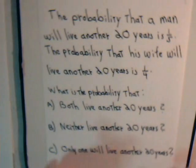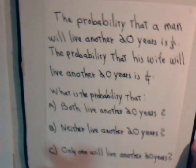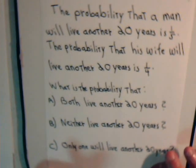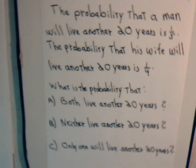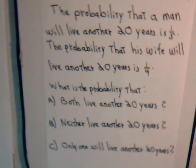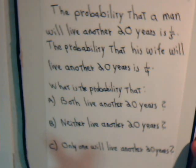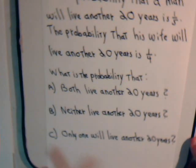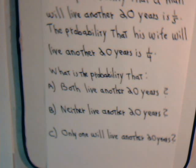In this one we have a pretty straightforward problem. The probability that a man will live after 20 years is one-fifth. The probability that his wife will live another 20 years is one-fourth. We are asked three questions: What is the probability that both of them will be alive after another 20 years? What is the probability that neither of them will be alive? And what is the probability that only one of them will live another 20 years?